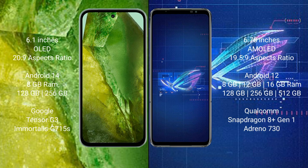Asus ROG Phone 6 comes with a 6.78-inch AMOLED display and aspect ratio 19.5:9. Google Pixel 8a runs on the Android 14 operating system. Asus ROG Phone 6 runs on the Android 12 operating system.